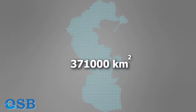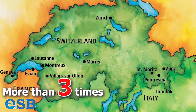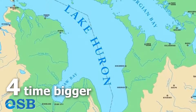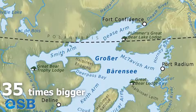The total area of the Caspian Sea is 371,000 km². This is equivalent to the area of Bangladesh and Tajikistan combined, and more than 3 times the area of Switzerland. The volume of this basin is 78,200 km³ — 4 times bigger than Lake Huron in the United States and Canada, or 35 times bigger than Great Bear Lake in Canada.